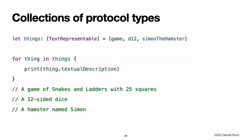Collections of protocol types. A protocol can be used as the type to be stored in a collection such as an array or a dictionary. This example creates an array of text-representable things, and it is now possible to iterate over the items in the array and print each item's textual description. Note that the thing constant is of type text-representable — it is not of type dice or dice game or hamster, even if the actual instance behind the scenes is one of those types. Nonetheless, because it is of type text-representable, it is safe to access thing.textual description each time through the loop.